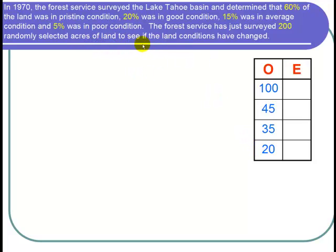Since we want to find out if the land conditions have changed and we have many different kinds of conditions, we're going to use a chi-squared goodness of fit test to find out if the new distribution of conditions fits the old distribution.